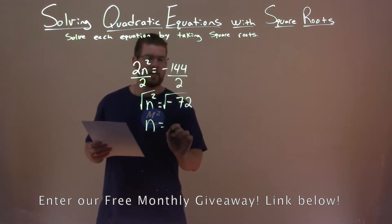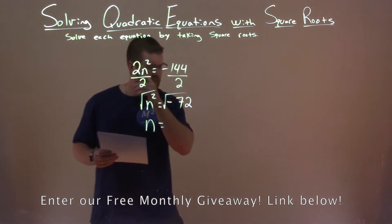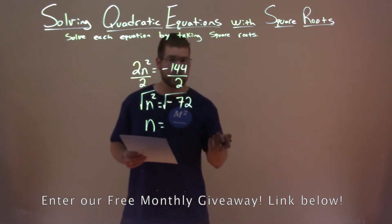So we're now left with n equals, well wait a minute. The square root of a negative number, we can't do that. That's imaginary.